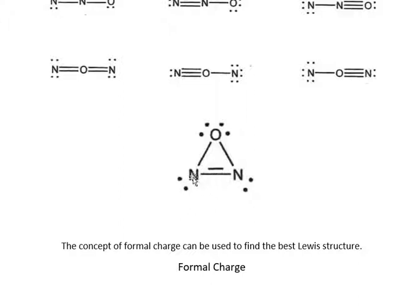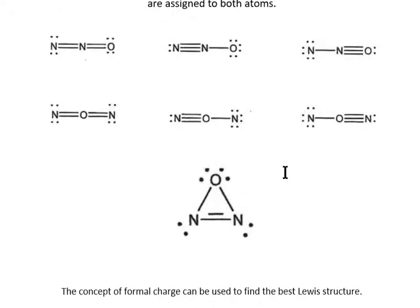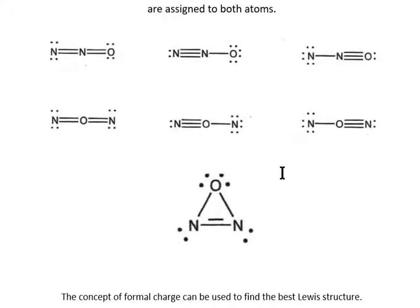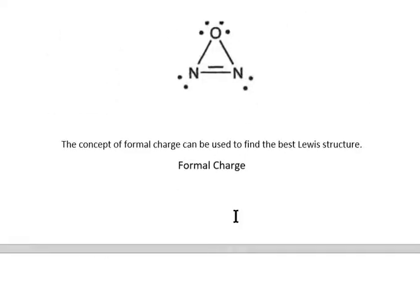For the bent structure, you can see nitrogen has eight electrons, nitrogen here has eight, and oxygen has eight. So the concept of formal charge will be used to find the best structure, whether it's NNO or NON or the cyclic structure.